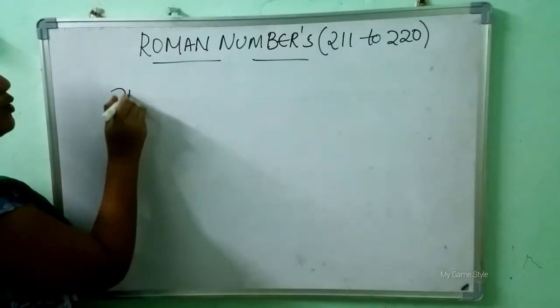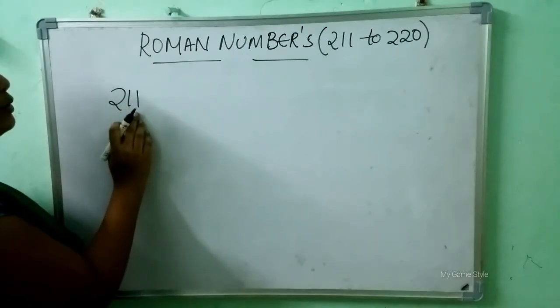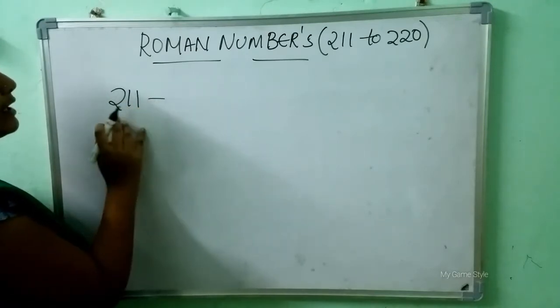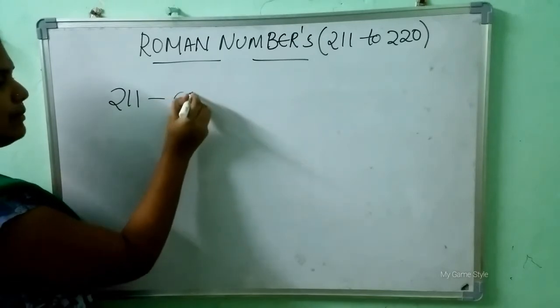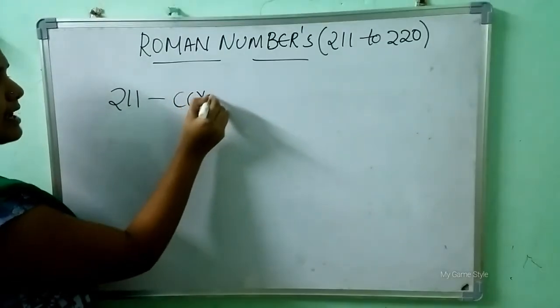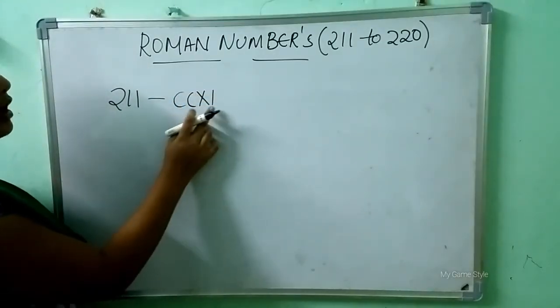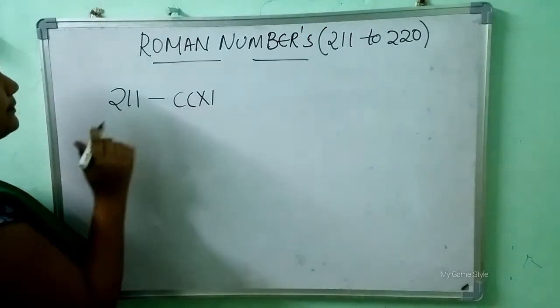211. So how to write 211 in Roman numbers? Here double C, X, I is 211.